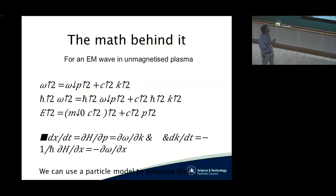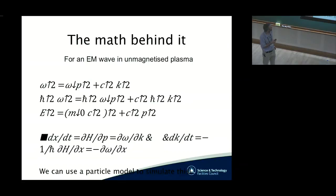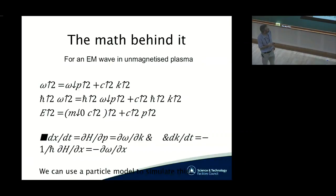I have a dispersion relation for electromagnetic waves in plasma: omega squared equals omega_p squared plus c squared k squared. Multiplying through by h-bar squared gives h-bar omega squared equals h-bar omega_p squared plus c squared h-bar k squared. Below that, the energy equation of a relativistic electron: E squared equals m_0 c squared squared plus c squared p squared. Here, h-bar omega is the energy of the wave, h-bar k is the momentum of the wave. It's the same equation.